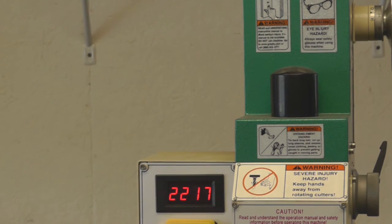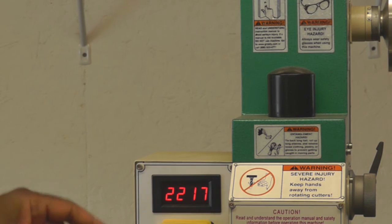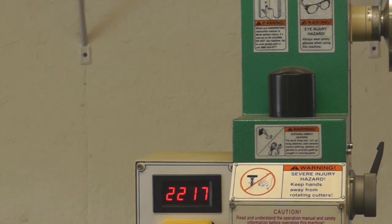As you can see, over the time for the 10 minutes, it's crept up to 2217. We're done with this phase and we can shut the mill off.